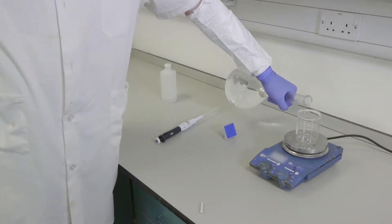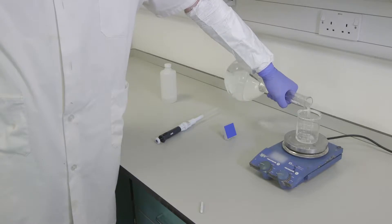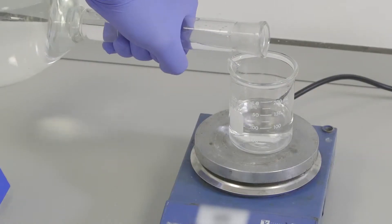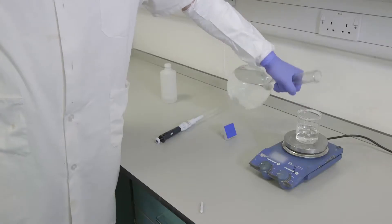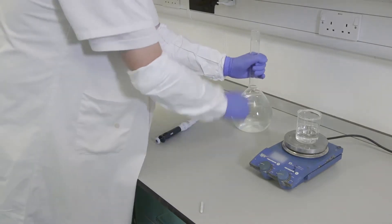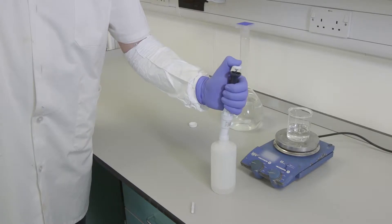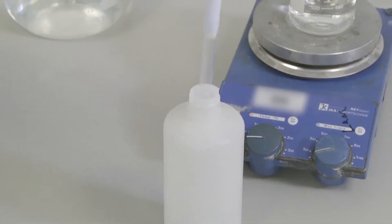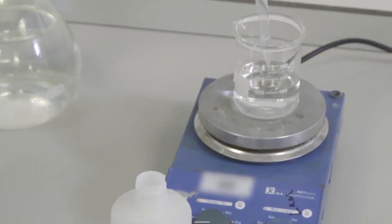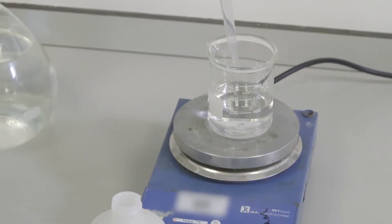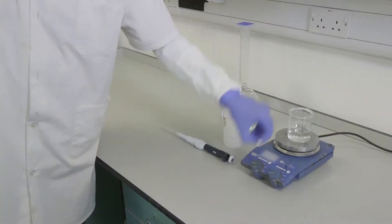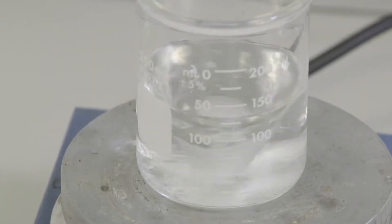Prepare 50 millimolar Tris buffer saline solution and add 1% Triton X-100 to a proportion of the solution. Put a magnetic stirrer in the beaker and stir until the Triton has gone into solution.